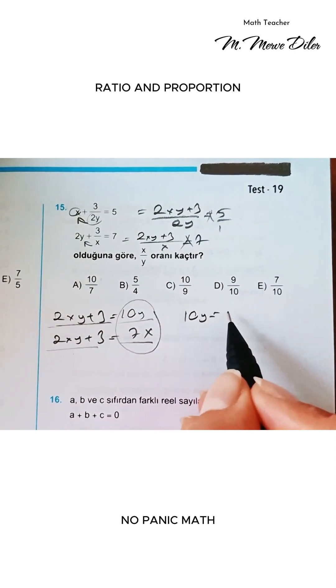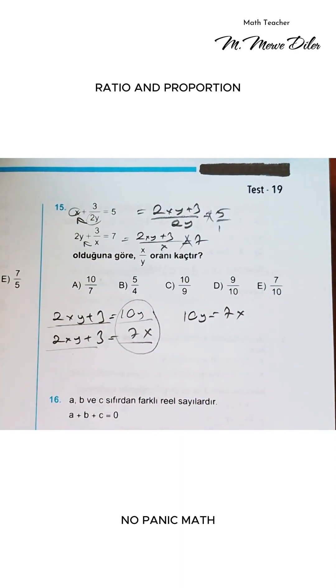So here, 10y will equal 7x. All right, this is also due to the rules of ratio and proportion.